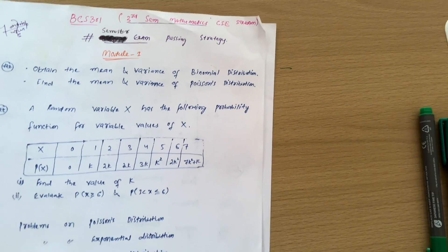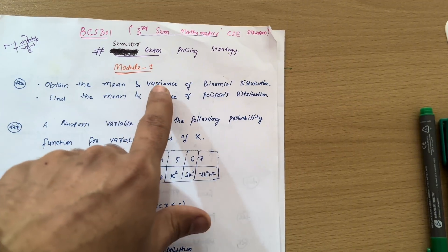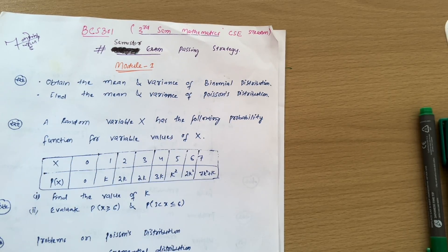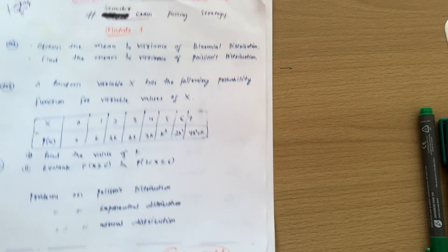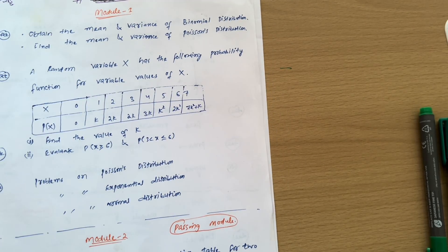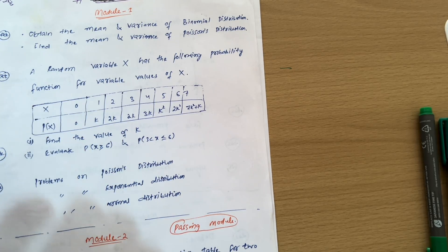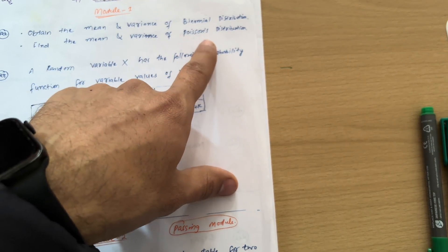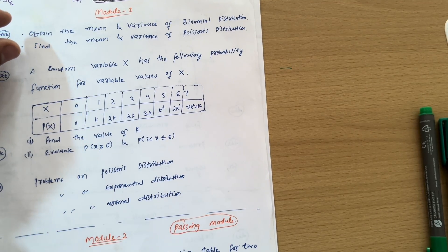If somebody is only thinking of passing, they should go through these three modules fully and take important questions from Module 1 and Module 4. If somebody wants to score in mathematics, they must go through all modules and practice varieties of problems — not only important questions. For passing students, obtain the mean and variance of binomial distribution and find the mean and variance of Poisson's distribution — VTU will definitely ask one among them, so be fully prepared for both these derivations.